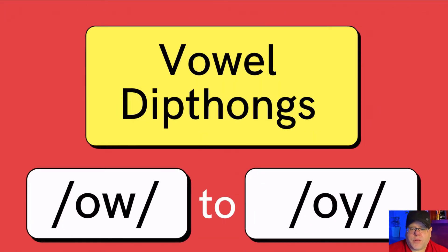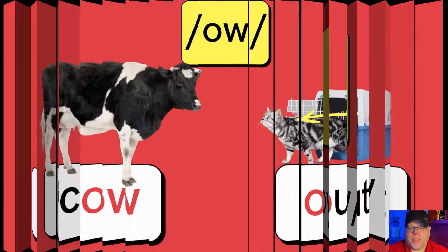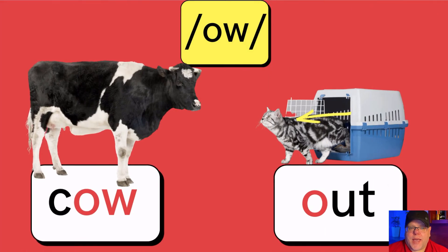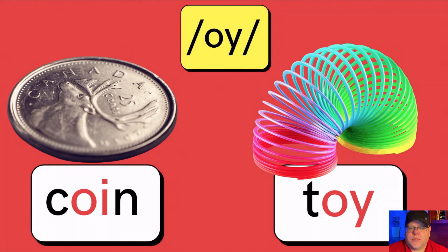Let's look at the vowel diphthongs now. Vowel diphthongs are when you take two vowels to create one sound — just like the consonant digraphs, except you're only using vowels. In this case, we're either going to use O and W together or O and Y together. OW as in cow or out. OI as in coin or toy.